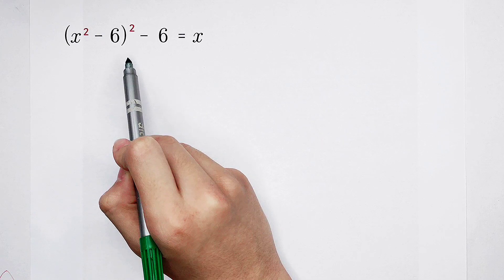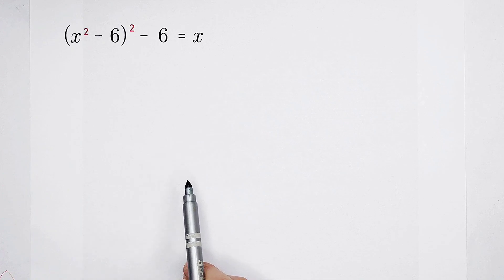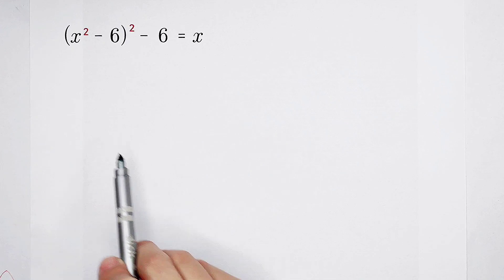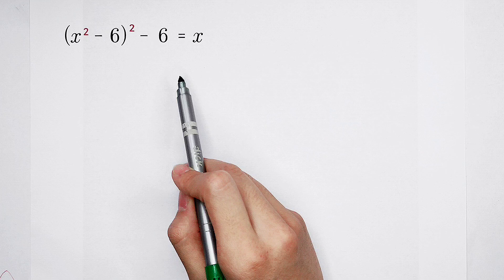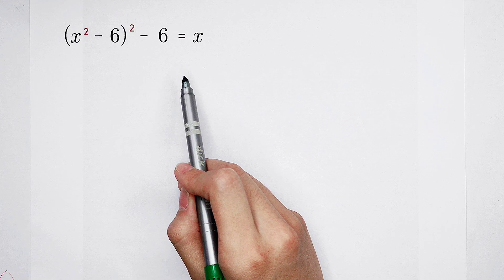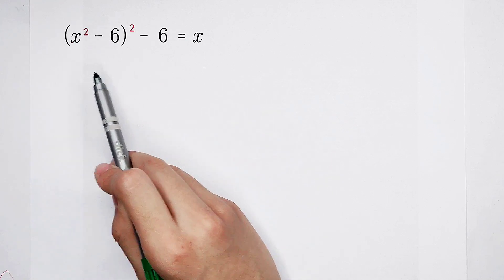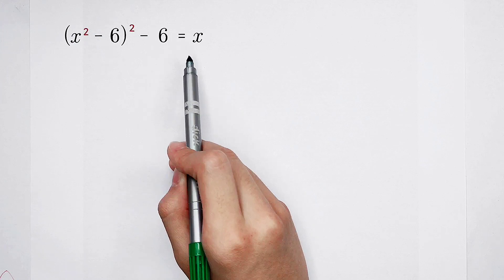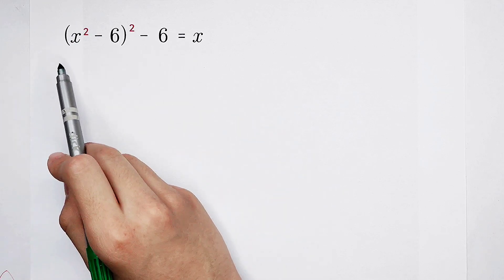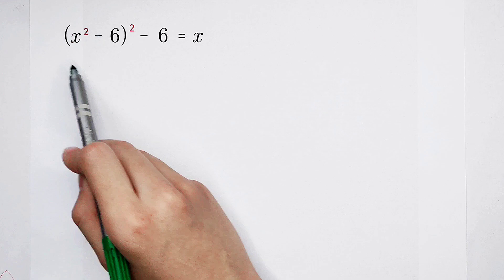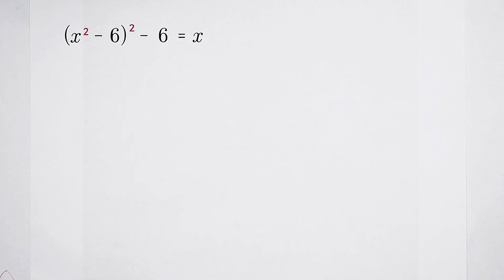So what should we do? For dealing with this equation, we have to have a look at its form. Something squared minus 6 is equal to x. And this x squared minus 6 is this something.